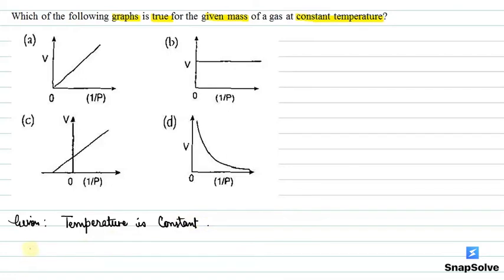According to Boyle's law, at constant temperature, PV is equal to KT. So here, if temperature is constant, then it is a constant. That is, this is equal to constant.